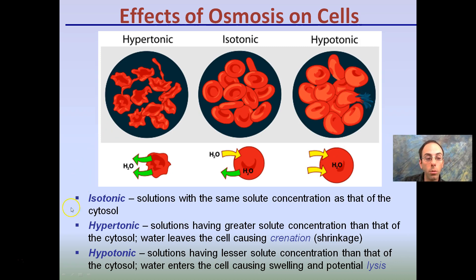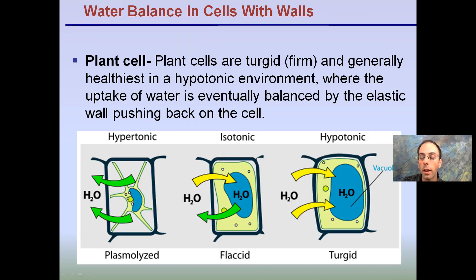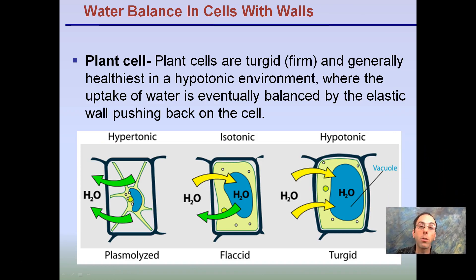So these are three kinds of situations we want to think about in terms of how these cells are being affected. Now those were animal cells — specifically red blood cells. Here we're looking at a plant cell.